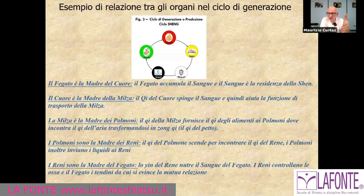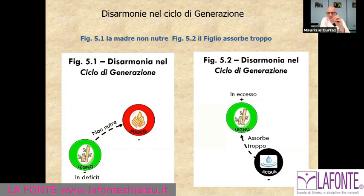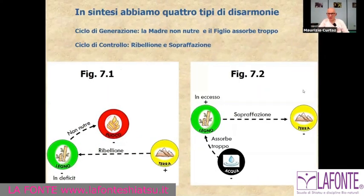Returning to the generation cycle: when we talk about wood being the mother of fire, it means that the liver, which belongs to wood, is the mother of the heart, which belongs to fire. In summary, equilibrium means that the generation cycle — the mother-child relationship — and the control cycle, where one element supports the function of another, are in balance. If this is disturbed, we can have four types of dysharmony: two in the generation cycle, and two in the control cycle — which are domination and rebellion.